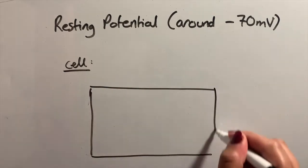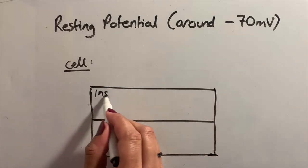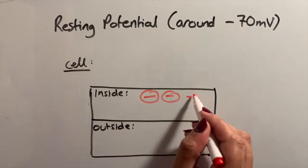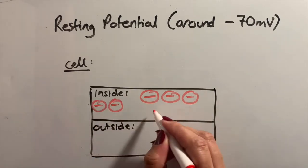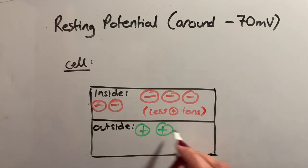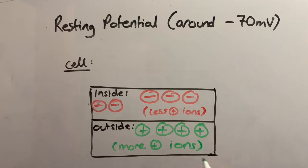For the sake of this video, let's represent the cell as a box. We have the inside of the cell and the outside of the cell. A resting potential is around minus 70 millivolts. When the resting potential is occurring, there is a negative charge inside the cell and the outside is positive, indicating it has more positive ions, whereas the inside has less positive ions. At this point, as there is a difference in charge, we state that the membrane is polarized.